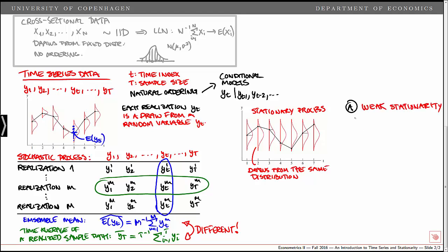A process is weak stationary if the mean is constant. The unconditional expectation of Yt is equal to the mean, which we denote mu. So it's constant over time. It does not depend on t. You can see that the mean of the red distribution here is the same at all points in time.